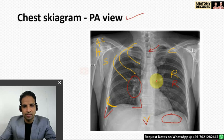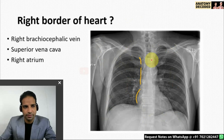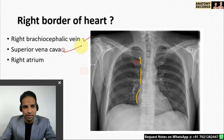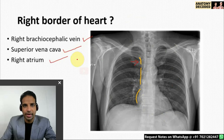Let us cover the cardiac border. Looking at structures forming the right border of the heart from superior to inferior: there is the right brachiocephalic vein in this region, then the superior vena cava, and then the right atrium. These three structures form the right border of the heart.